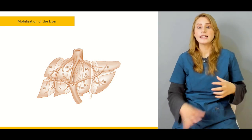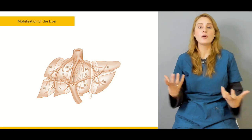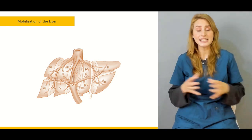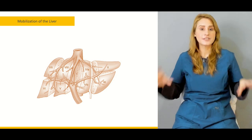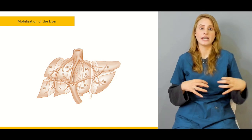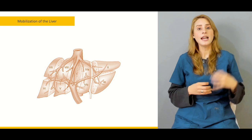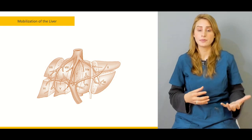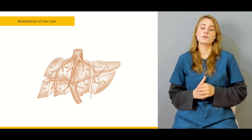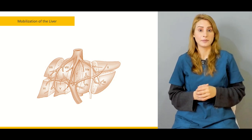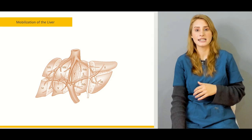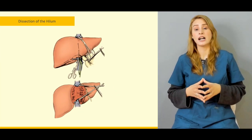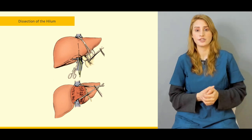Then we'll be talking about mobilization of the liver. We know that the liver is connected to different structures located within the abdomen — different kinds of ligaments. What are those ligaments and why we need to divide these ligaments, we'll be talking about that in detail.